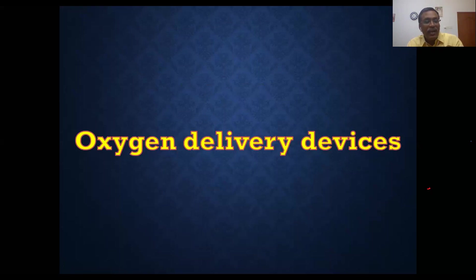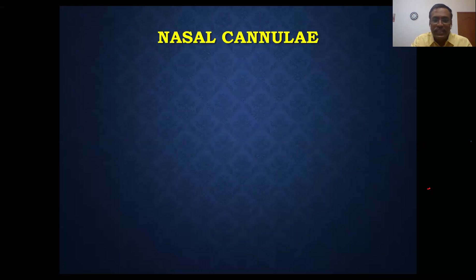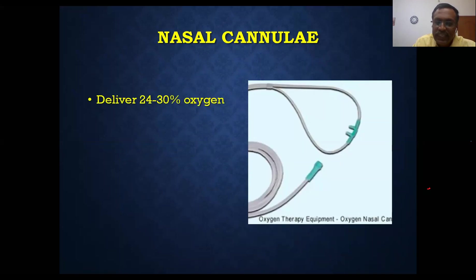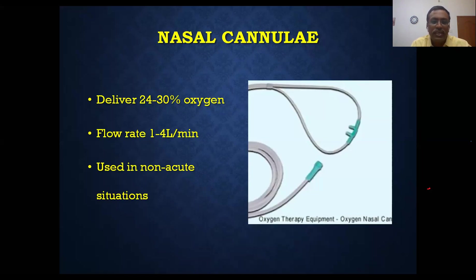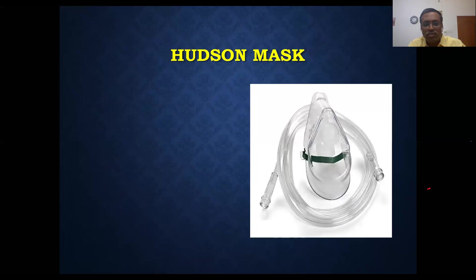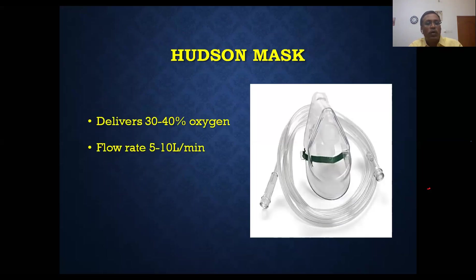In this situation, let us review available oxygen delivery devices before discussing HFNO. The simple nasal cannula delivers FiO2 of 24–30% at a flow rate of 1–4 liters per minute; it is used in non-critical situations. Next is the standard face mask (Hudson mask), which delivers FiO2 of 30–40% at a flow rate of 5–10 liters per minute, commonly used in wards.